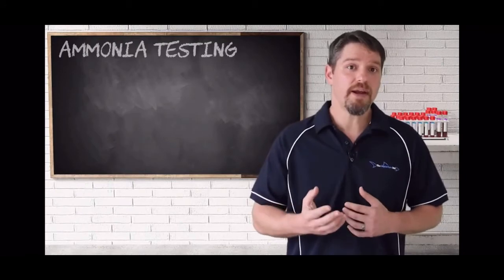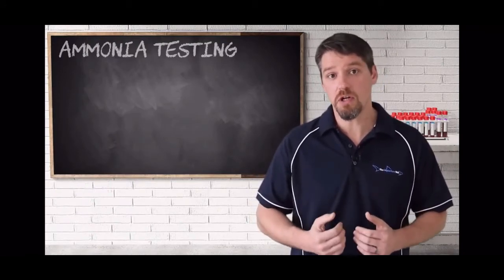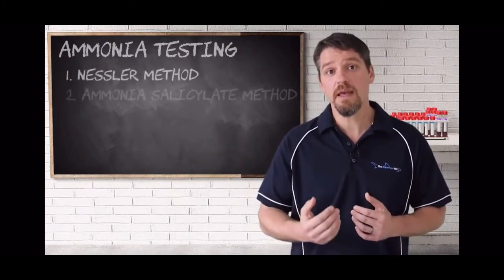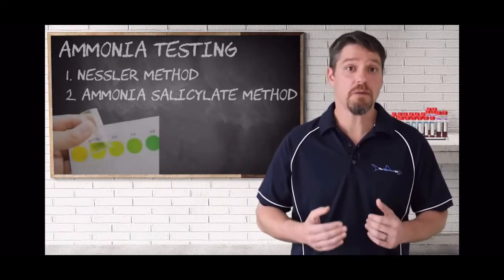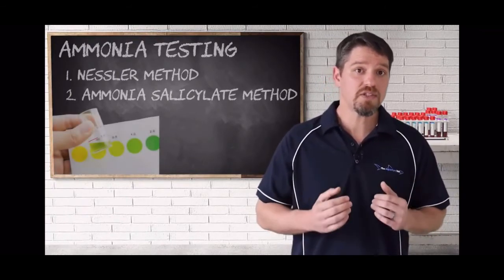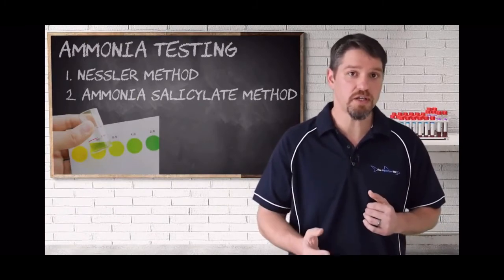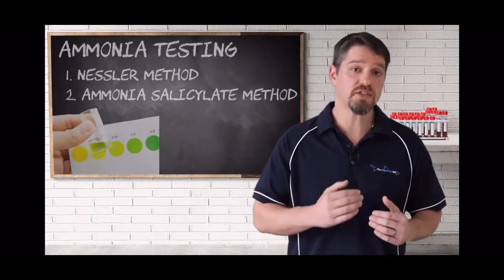Depending on the brand of tests that you're using, one of two different methods will be used to determine the total ammonia. And these two methods are the Nestler method and the ammonium salicylate method. Both tests are colorimetric tests, meaning that the concentration of ammonia is actually determined by a color change in the solution. You will then use a reference chart in order to determine the concentration that's there.